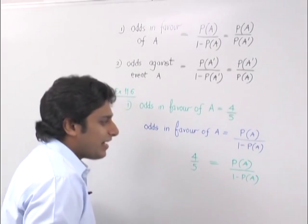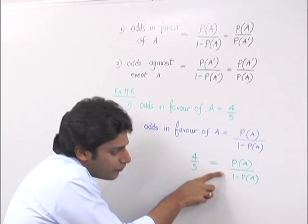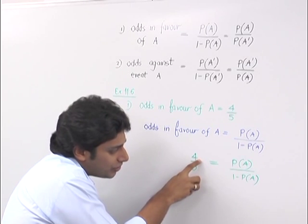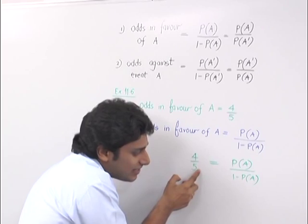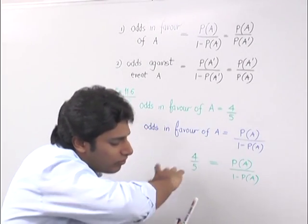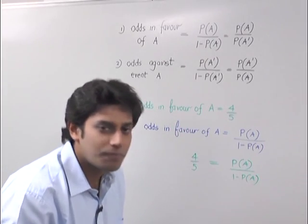Now you will know what you will do in regular method. Cross multiply. 4 into 1 minus P of A is equal to 5 P of A. 4 minus 4 P of A is equal to 5 P of A. This is a long cut method. I don't appreciate it.